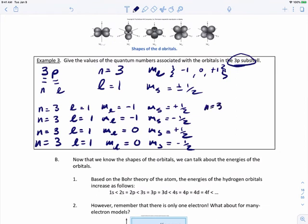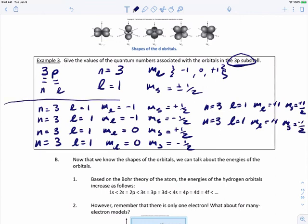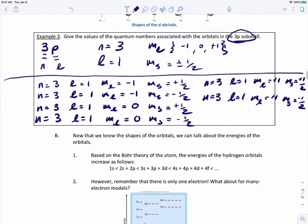And then the last set, you've got N equals 3, L equals 1, M sub L equals plus 1, M sub S equals plus 1 half. And then you have N equals 3, L equals 1, M sub L equals plus 1, M sub S equals negative 1 half. And so those are the possible sets of quantum numbers for electrons that are in the 3P subshell.